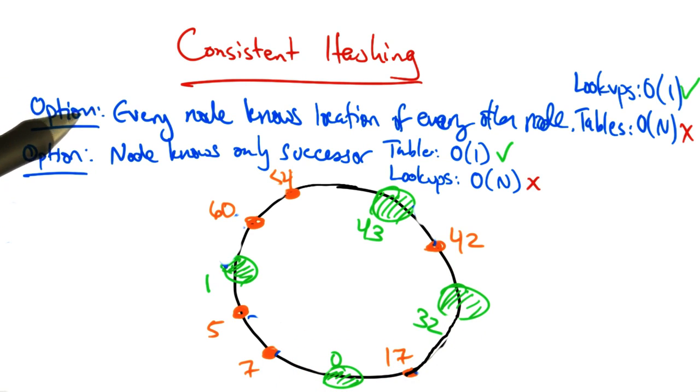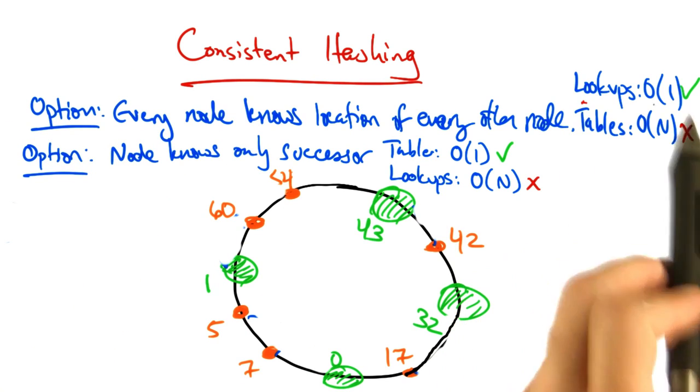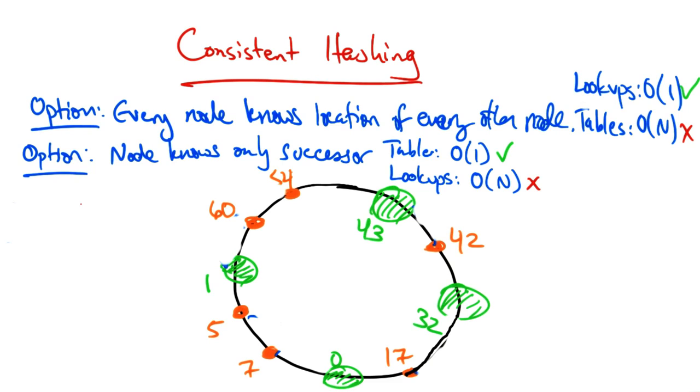So in summary, if every node knows the location of every other node, then lookups have good performance at the expense of larger tables. If every node only knows its successor, then routing tables can be small. But every lookup operation is order n.